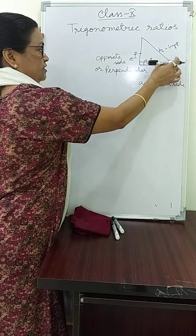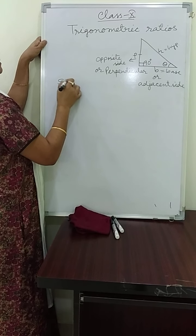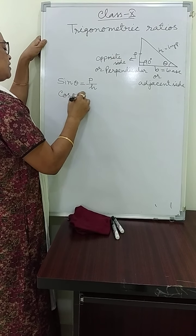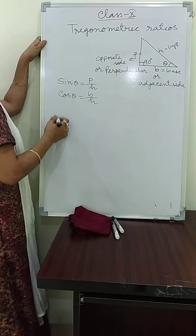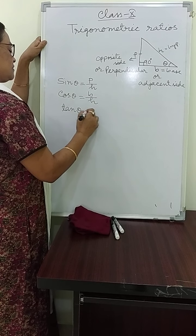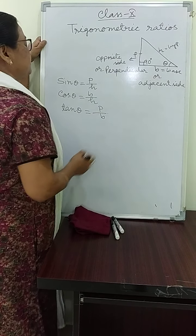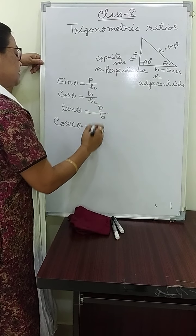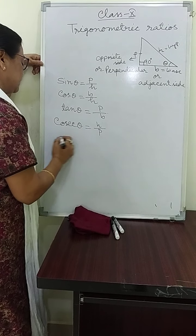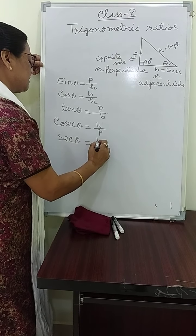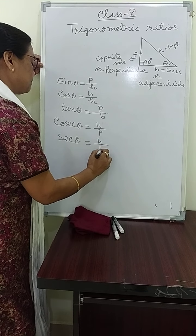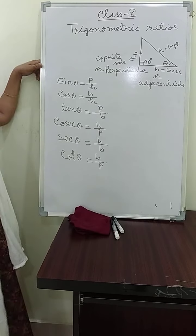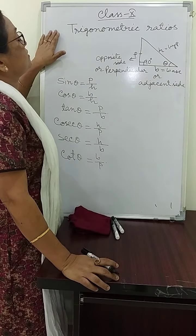So if we consider this angle, we have six trigonometric ratios. That is: sine theta is perpendicular by hypotenuse. Cos theta is base by hypotenuse. Tan theta is perpendicular by base. Then the reciprocal of sine is cosec theta, which is H by P. Sec theta is H by B. And cot theta is B by P. These are the six trigonometric ratios already studied in class 9.